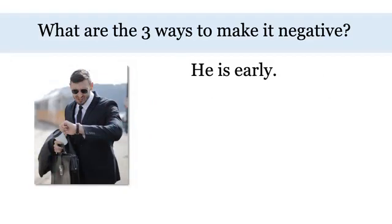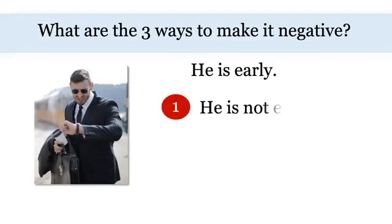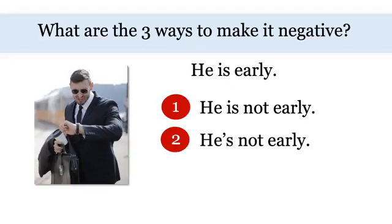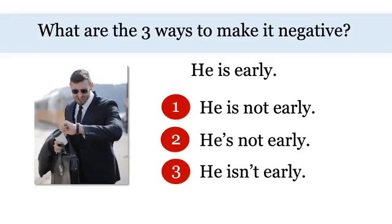What are the three ways to make this sentence negative? 'He is early.' I don't think so. One: he is not early. Two: he's not early. Three: he isn't early.